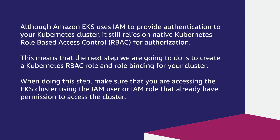Although Amazon EKS uses IAM to provide authentication to your Kubernetes cluster, it still relies on native Kubernetes role-based access control for authorization. So the next step we are going to do is to create a Kubernetes RBAC role and role binding for your cluster. When doing this step, make sure that you are accessing the EKS cluster using the IAM user or IAM role that already has permission to access the cluster.